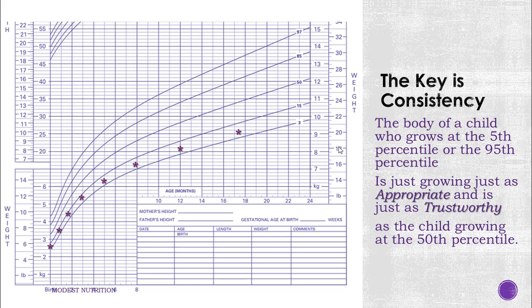You can trust the child to grow normally even if they are at extreme percentiles and growing persistently along that growth line.